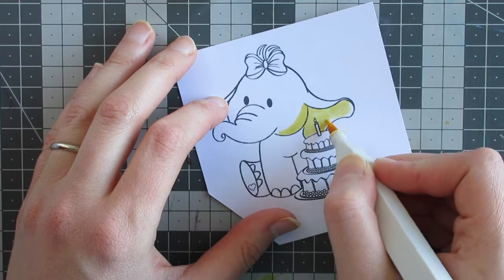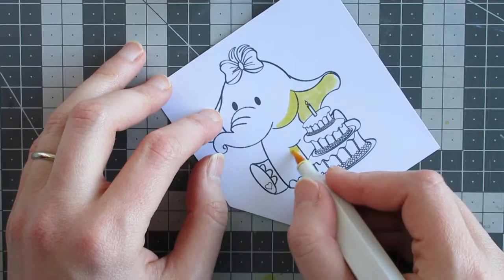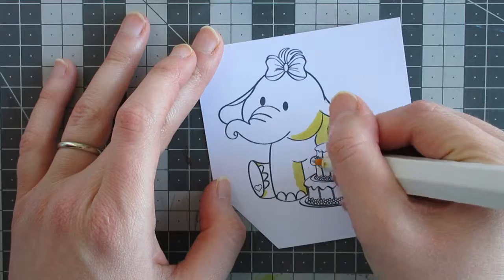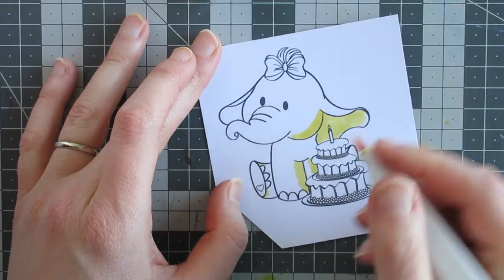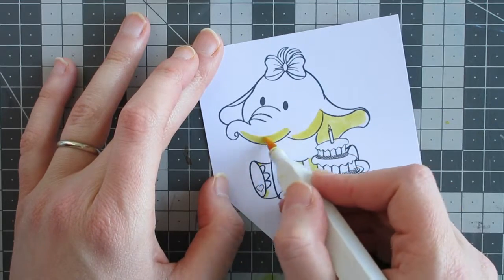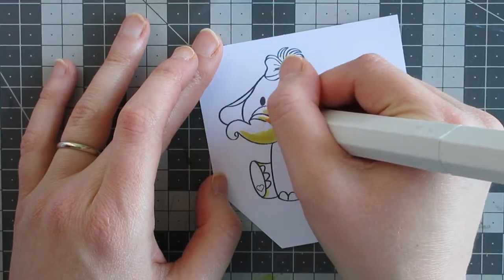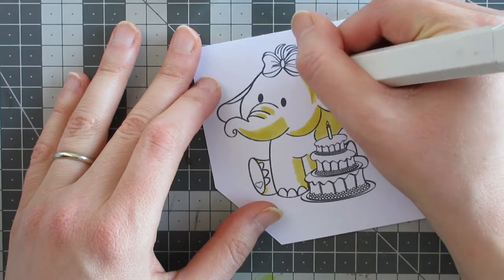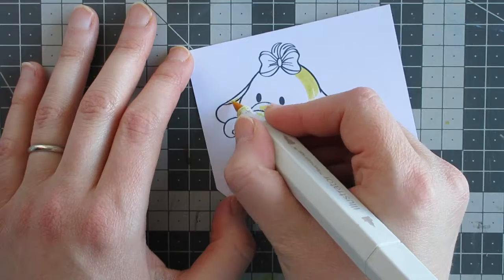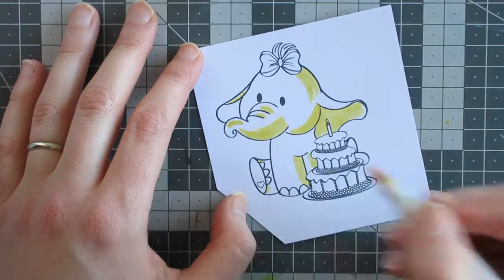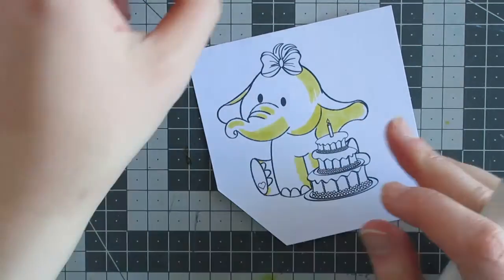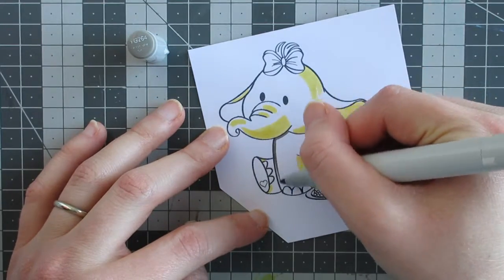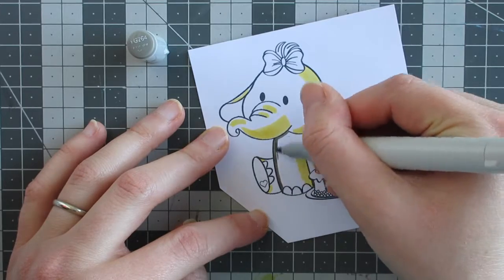This digi stamp has a little candle on the top of the cake and I am coloring the elephant as if the candle is the primary light source for this picture. So I am starting by putting down yellow in all the places where the light from the candle will be shining onto the elephant, just everywhere that is kind of pointed towards the candle.